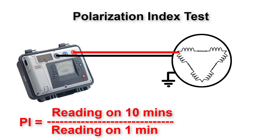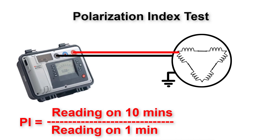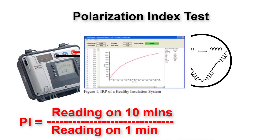This ratio is then compared to a standard table. If the ratio is below 1, this is dangerous and means the insulation is degrading over time. Between 1 and 1.4 the condition is poor; between 1.5 and 1.9 it is questionable; between 2 and 2.9 it is fair; between 3 and 4 it is good; and above 4 it is excellent.